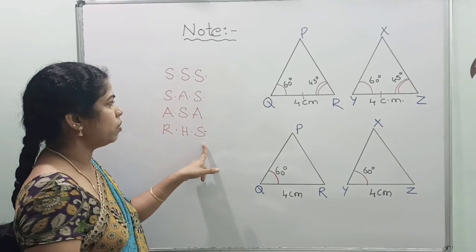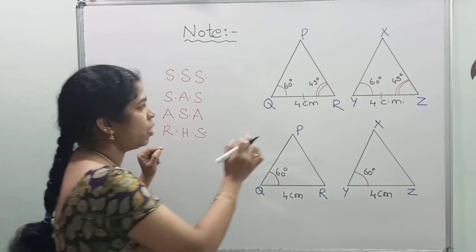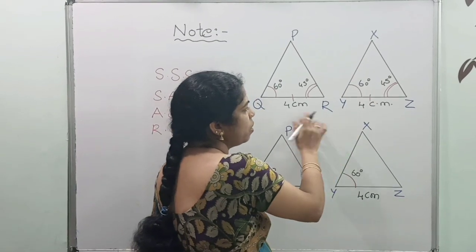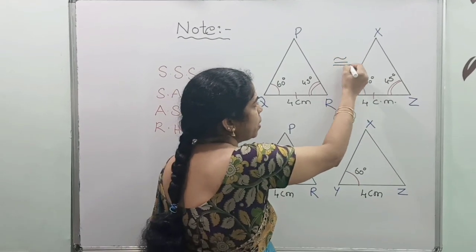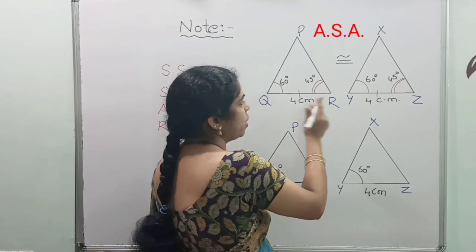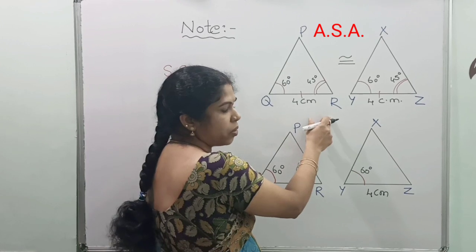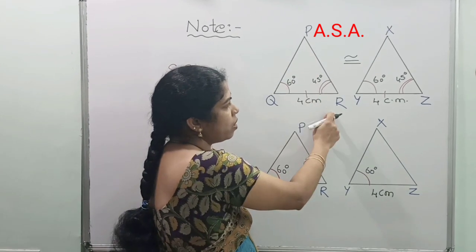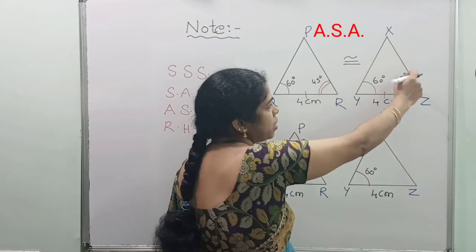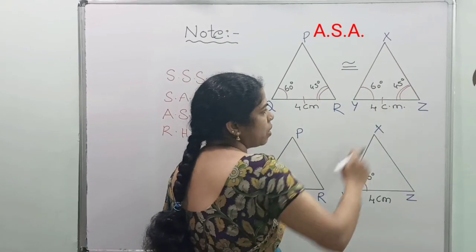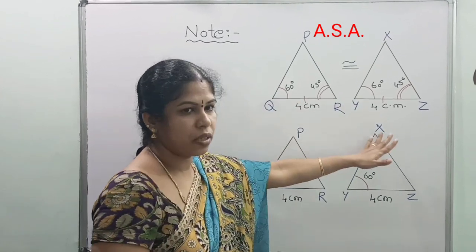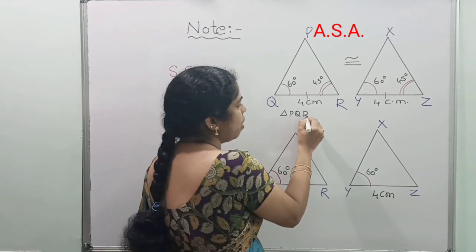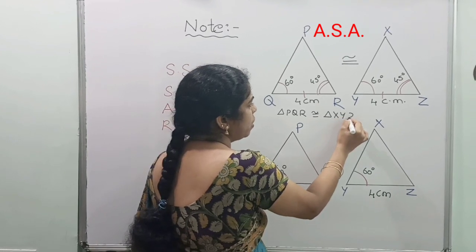You have already learned the core congruency criteria. If you observe these two sets of triangles — triangle PQR and triangle XYZ — both are congruent to each other as per ASA congruency. Here, two angles and the included side of triangle PQR are equal to two angles and the included side of triangle XYZ. So triangle PQR is congruent to triangle XYZ by ASA congruency.